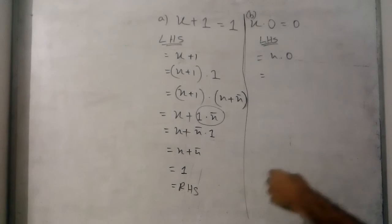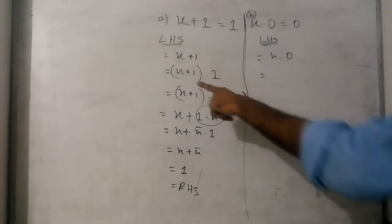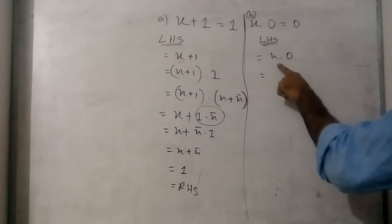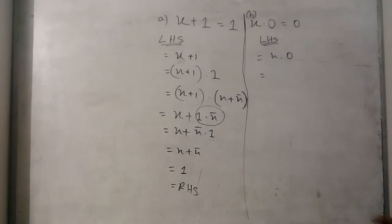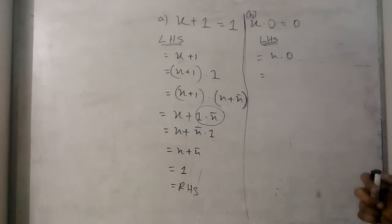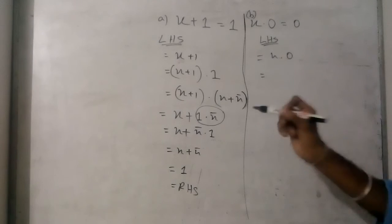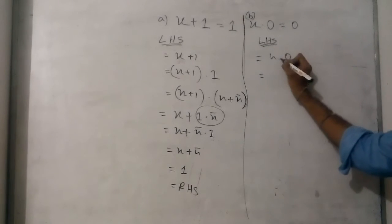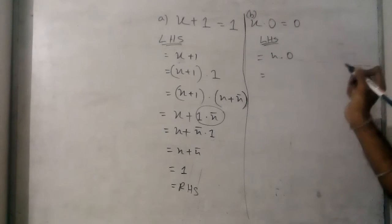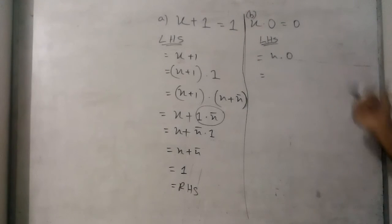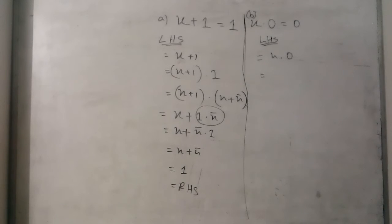Here you can see x plus 1, and whatever is written over there will be the opposite of the other side. We will change the plus value into multiply and the 1 value into 0. These are the rules of duality.